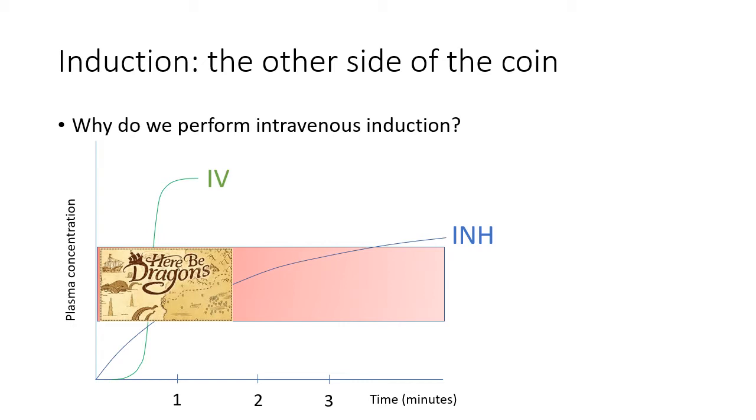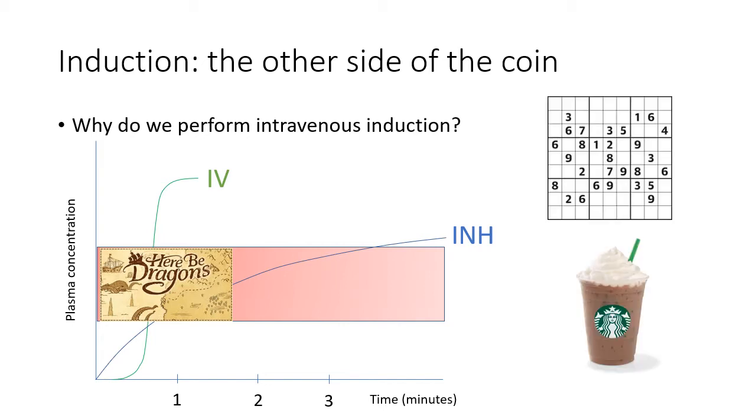During induction of anaesthesia with diethyl ether, I've been told it takes about 10 minutes to pass through that stage. With a nitrous oxide and sevoflurane induction in a five-year-old, it might be a couple of minutes. But during a rapid sequence induction with propofol, it's all over in a matter of seconds. I expect there are other reasons why we prefer rapid inductions, but the kinetic explanation is probably the best one.